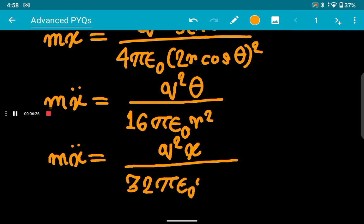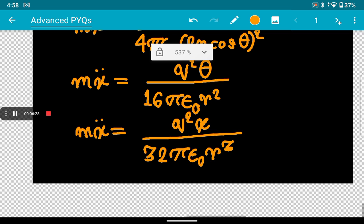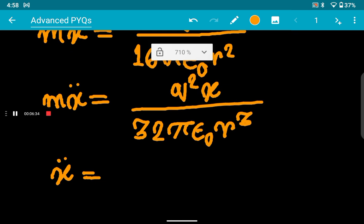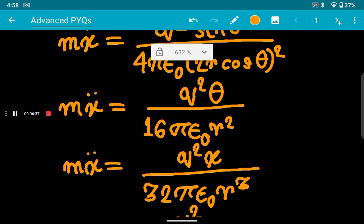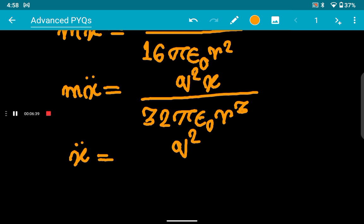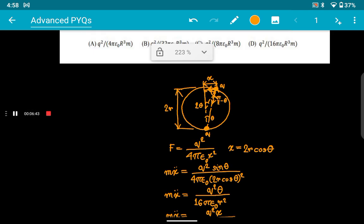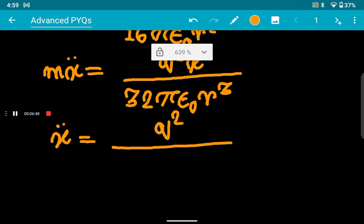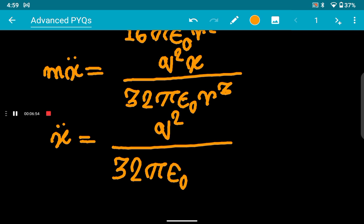If you write this, it will be 32πε₀r³, and now we are done. If you write the acceleration, which is ẍ, this will be q²—let's just ignore the minus sign here for now. Just a correction: the radius was capital R; I have used small r throughout. Anyway, that doesn't matter much. And this will just come out to be R³m.